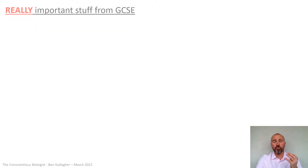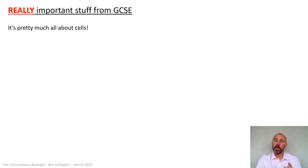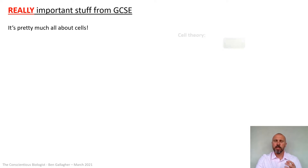We're looking at the really important stuff from GCSE — this is the stuff you just can't neglect or you won't understand it. Biology is pretty much all about cells. All living things are made of cells, so almost everything we study in biology comes back to a cellular level.